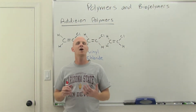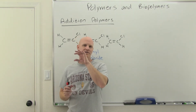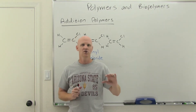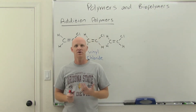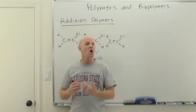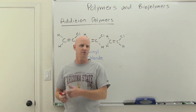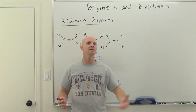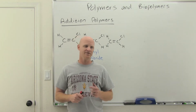A polymer is when you connect a number of identical or very similar looking reactants into a big long chain. We call the individual subunits monomers, and when you start hooking them together, you make a polymer. That polymer could be 10 subunits long or a million subunits long, depending on what kind of compound we're talking about.